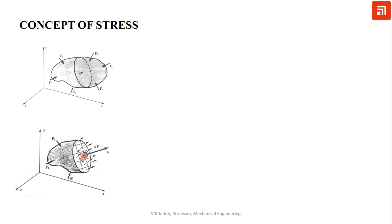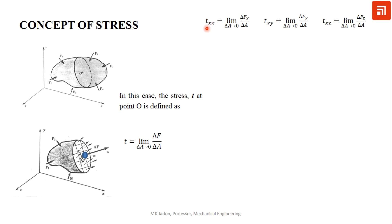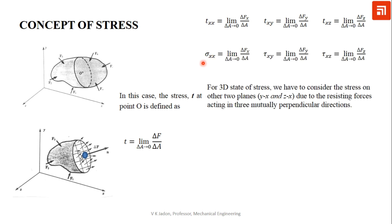If we take a small element and consider point O, we can write the general stress term as delta F divided by delta A, as the limit of delta A tends to zero. This limit is taken so that only force is present — there is no effect of the moment of this force. We can then take components of this stress in three directions: one normal to the plane (giving normal stress) and two along the plane (giving shear stress).